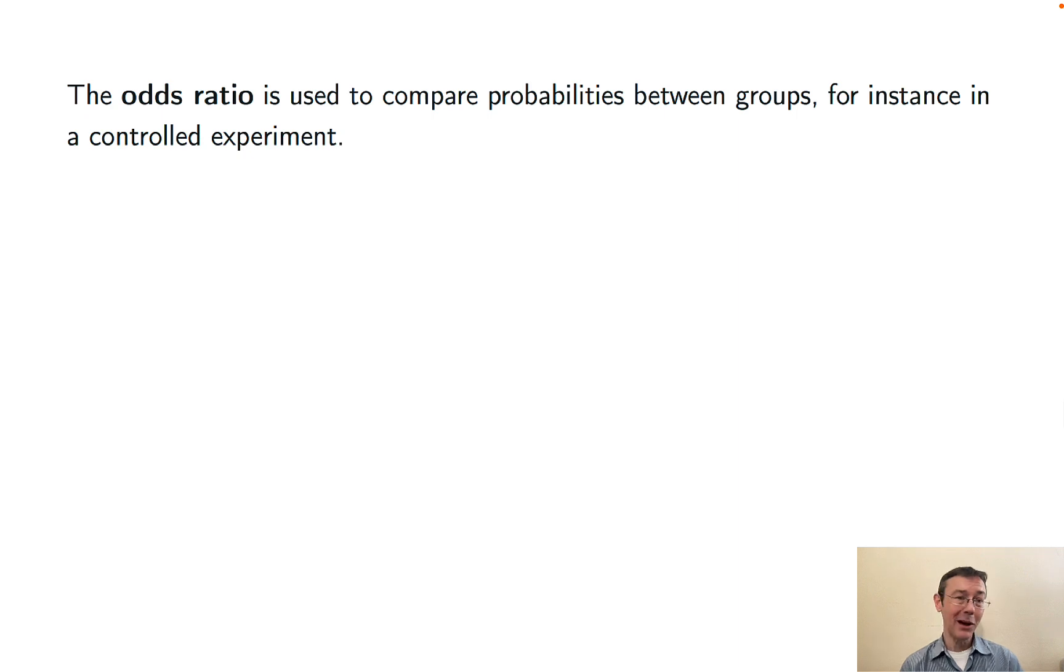The odds ratio is a common and powerful way of comparing probabilities between groups, for instance in medical experiments or observational studies. It's computed exactly like you'd expect. You take the odds of the first event and divide that by the odds of the second event to get the odds ratio.